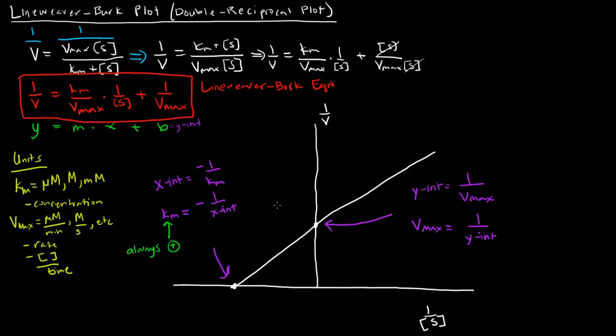So that's a brief introduction to the Lineweaver-Burk plot. I hope that was helpful and pretty simple. But the important things to keep in mind, of course, are this equation and how it is graphed. And it's important to remember these little equations here. So that if you're asked to calculate the Vmax or the Km and you're given these intercepts, then you'll be able to do it. In addition, this slope here is equal to the Km over the Vmax.